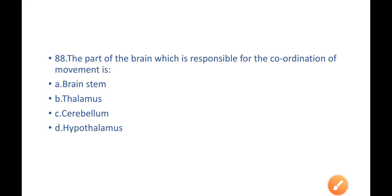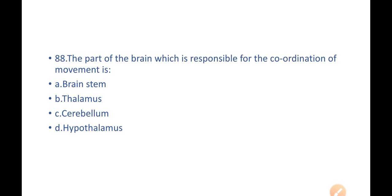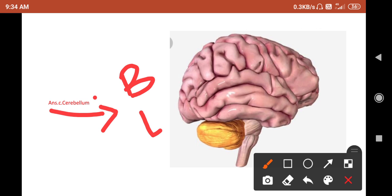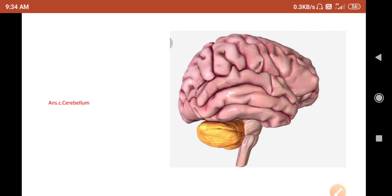Next: which part of the brain is responsible for coordination of movement and regulates body movement? A) brain stem, B) thalamus, C) cerebellum, D) hypothalamus. The answer is C — cerebellum. Everyone knows that the cerebellum is responsible for balance and equilibrium of the human body. The yellow-colored part shown in the diagram is the cerebellum.